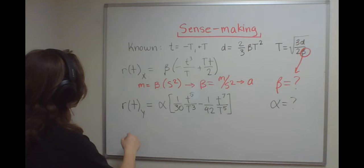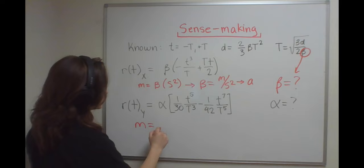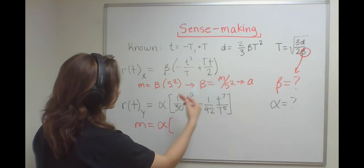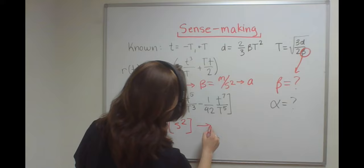Same with position y component, we have meters plus whatever alpha is times seconds squared. So alpha also is an acceleration, which means it has units of meters per second squared.